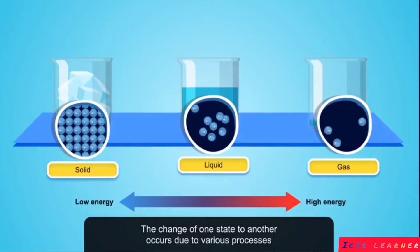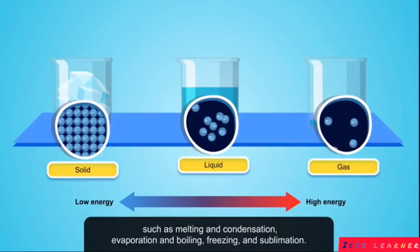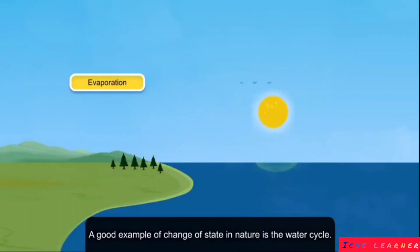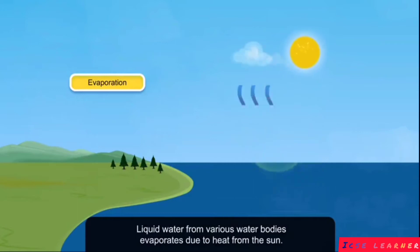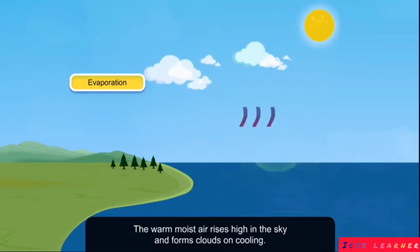Such as melting and condensation, evaporation and boiling, freezing and sublimation. A good example of change of state in nature is the water cycle. Liquid water from various water bodies evaporates due to heat from the sun.